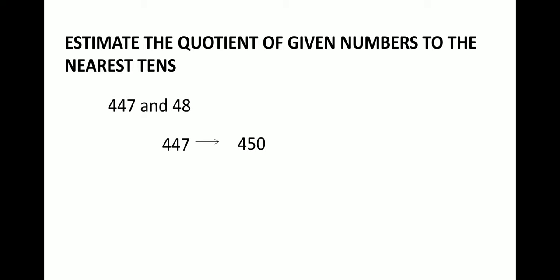And similarly 48 when you round it off, it is close enough to 50. Thus the required quotient will be equal to 450 divided by 50. And here if you just cancel the zeros, then it will be 45 divided by 5 which is equal to 9. So 9 is the estimated quotient of these two numbers.